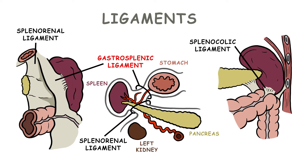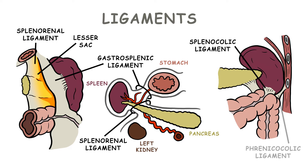Between the gastrosplenic ligament and the splenorenal ligament is the lesser sac. Note that the spleen is supported by the phrenicocolic ligament, which is a fold of the peritoneum that originates from the colon.